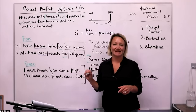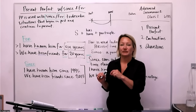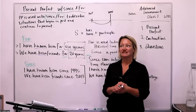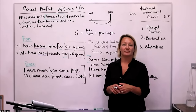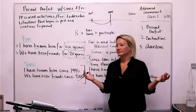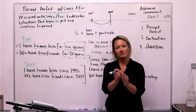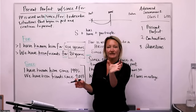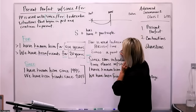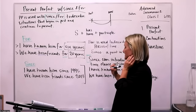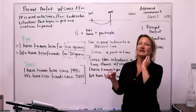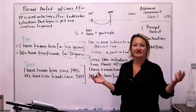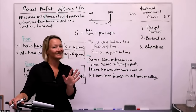We can use 'since' to discuss a point in time. Both of these examples have specific time points: I have known him since 1995; we have been friends since 2013. Instead of dates, you could say 'I've known him since yesterday' or 'since January.' So 'since' gives us a specific starting point in time, while 'for' gives us the duration.